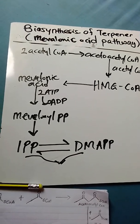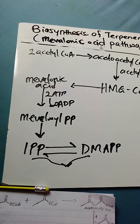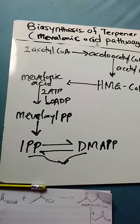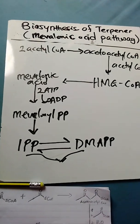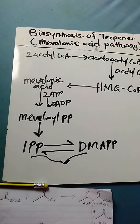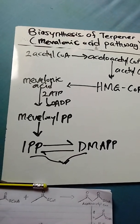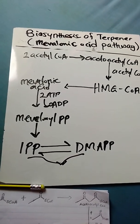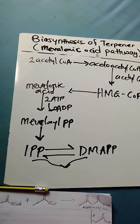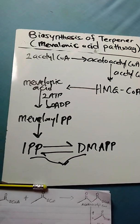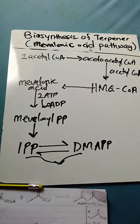The mevalonic acid then undergoes pyrophosphorylation to produce mevalonate pyrophosphate. The mevalonate pyrophosphate then undergoes decarboxylation and dehydration to produce isopentenyl pyrophosphate. The isopentenyl pyrophosphate then undergoes isomerization, changing position of functionality regarding the double bond, to produce dimethylallyl pyrophosphate.